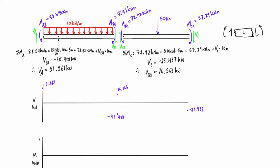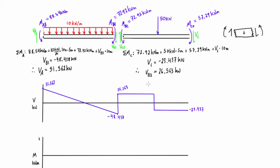Using our knowledge of shear force diagrams: with a distributed load of 10 kilonewtons per meter over a 10-meter span, the shear drops linearly by 100 units across that region. Indeed, 51.562 minus 100 equals negative 48.438, so the shear reduces linearly. It then jumps up at the roller support at B, and in the second span the shear is constant until hitting the point load. Notice that 26.563 minus 50 gives negative 23.437.